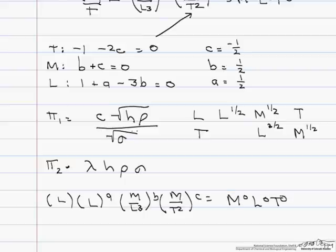And actually, if we look by inspection, we see because there is no T except for in the c term, that c has to equal zero. And if c equals zero, then the only place that M appears is in the b term.